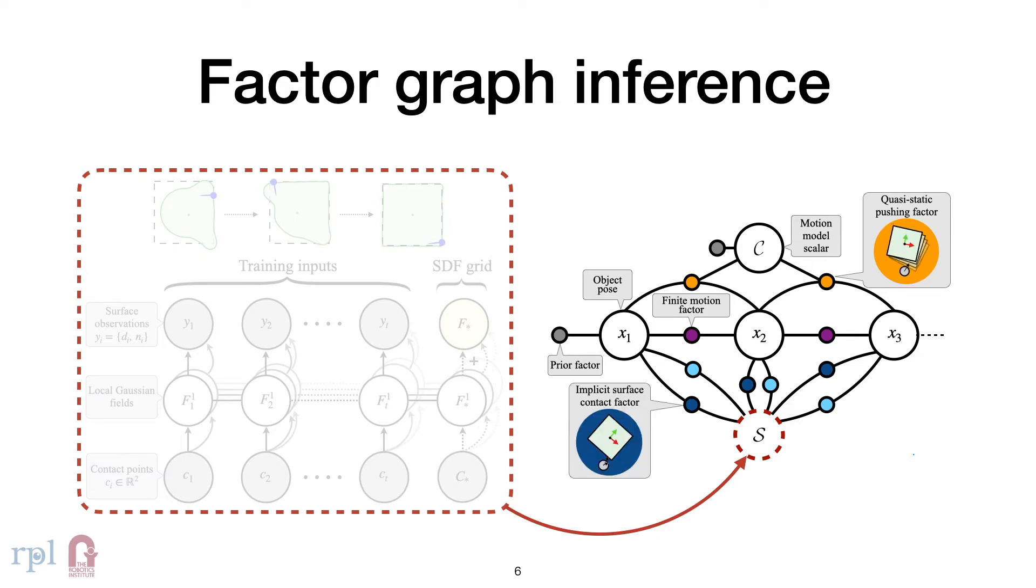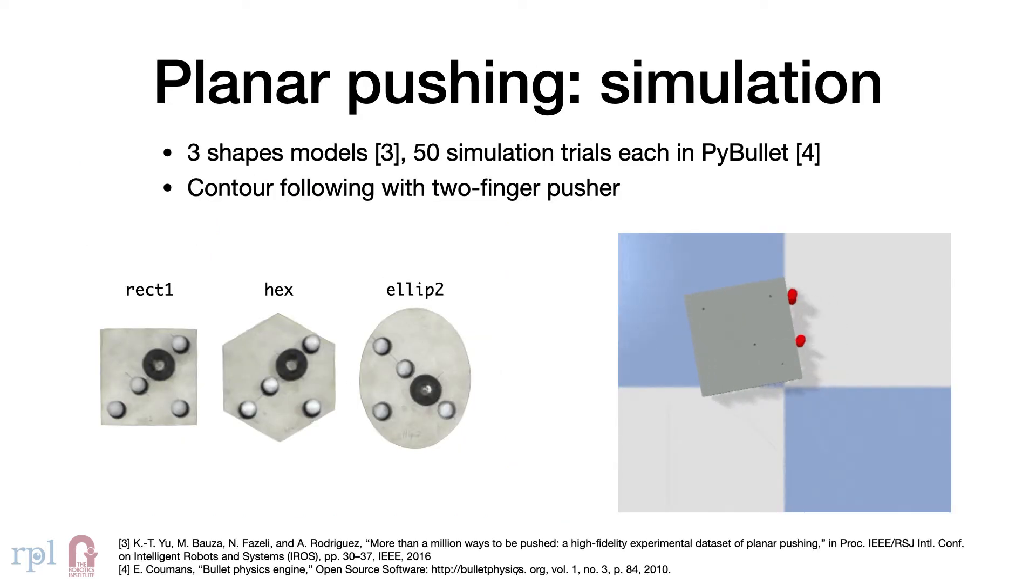This includes encouraging contact points to lie on the estimated implicit surface and enforcing non-intersection for the pusher-slider, even when contact is not sensed. We first evaluate our method in simulation using PyBullet.